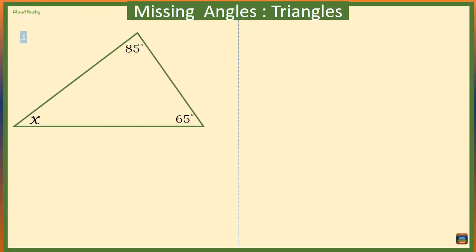Our first example: in this triangle we want to find the value of the angle that is marked with an x. We know that angle x plus 85 degrees plus 65 degrees should be 180 degrees. Now 85 degrees plus 65 degrees is 150 degrees, so we have x plus 150 should be equal to 180 degrees.